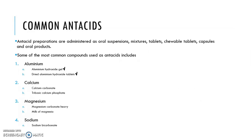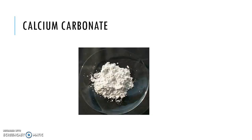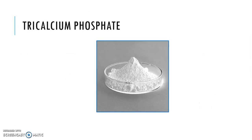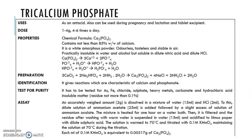The second common antacid type is calcium, which includes calcium carbonate and tricalcium phosphate. This is the monograph for calcium carbonate, and this is the monograph for tricalcium phosphate. We will discuss these monographs in class.